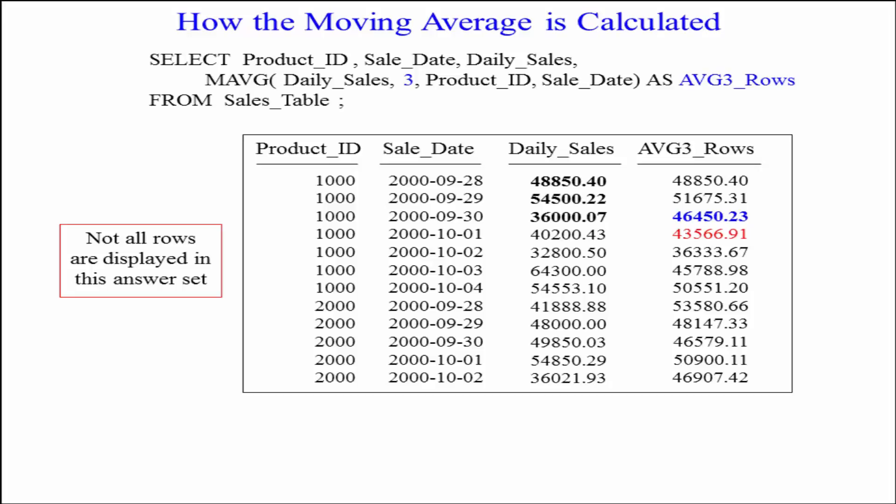That was a moving average of the daily sales for the current row 36,000 and the previous two, 54 and 48.